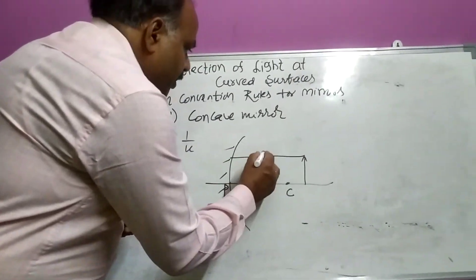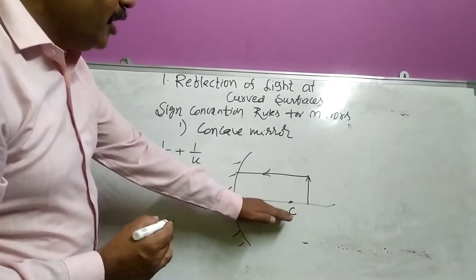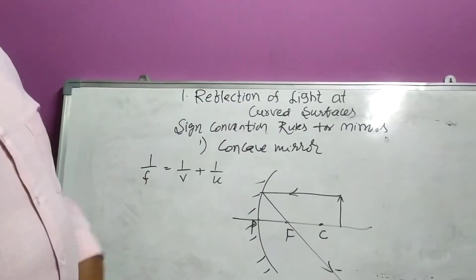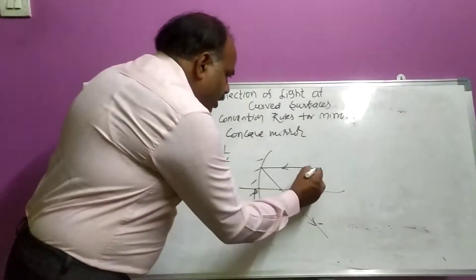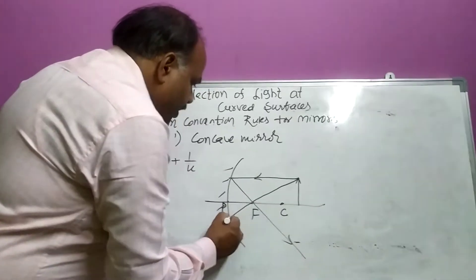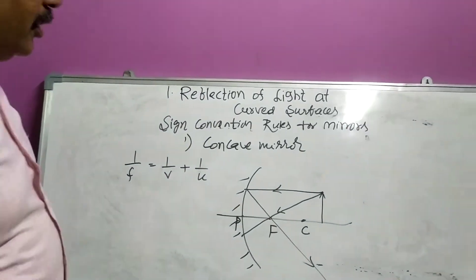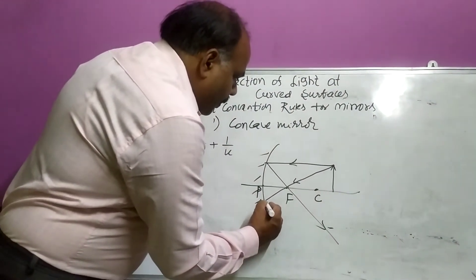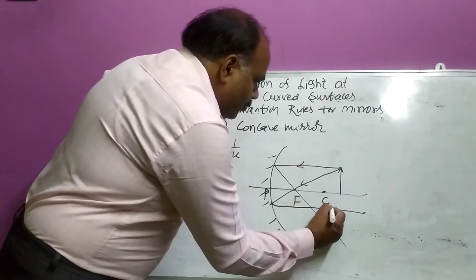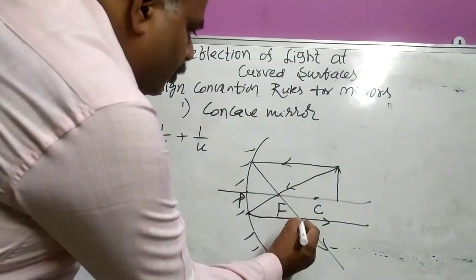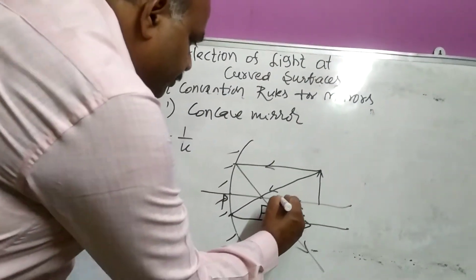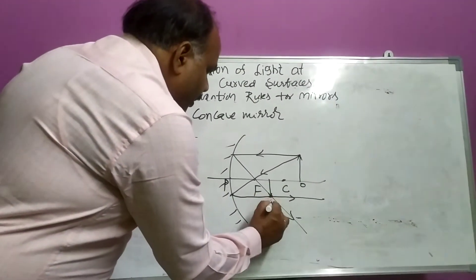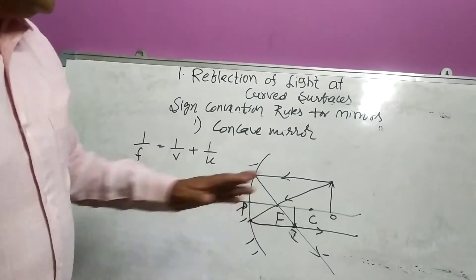how the image will be formed? This is ray 1, which is parallel to principal axis, will pass through focal point. The second ray, which passes through focal point, after reflection, it will be reflected parallel to principal axis. Now, both they meet here. This is object, this is image. Image is formed between F and C.